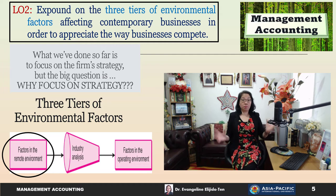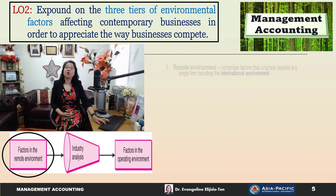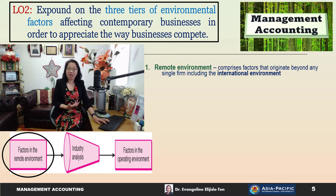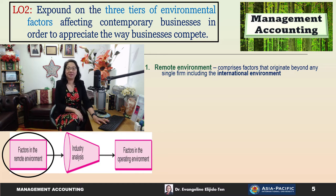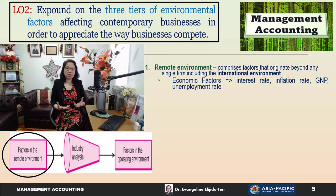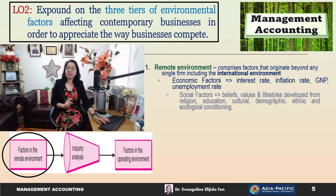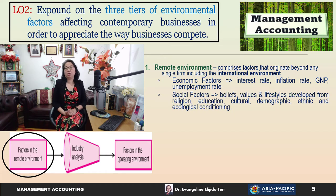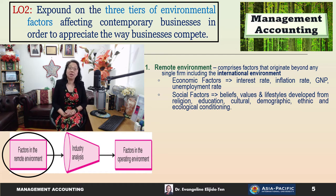The outermost layer — the remote environment — comprises factors that originate beyond any single firm, including the international environment. This includes economic factors such as interest rates, inflation, gross national product (GNP), and unemployment rates. It also includes social factors — beliefs, values, and lifestyles developed from religion, education, cultural, demographic, ethnic, and ecological conditioning.